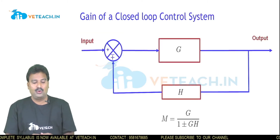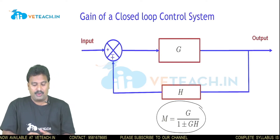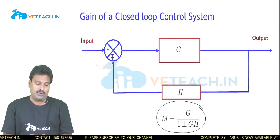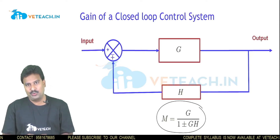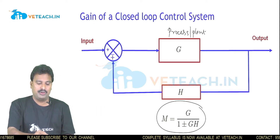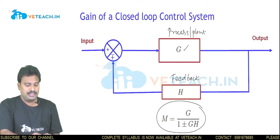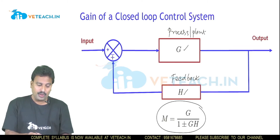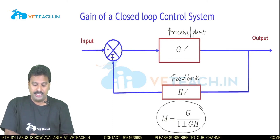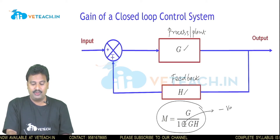We look at the gain of a closed loop control system. The detailed derivation of this gain formula will be explained during block diagram algebra. This is the representation of a closed loop system — the process or plant is represented with transfer function G, and the feedback is represented with transfer function H. The overall gain M is equal to G divided by 1 plus or minus GH.